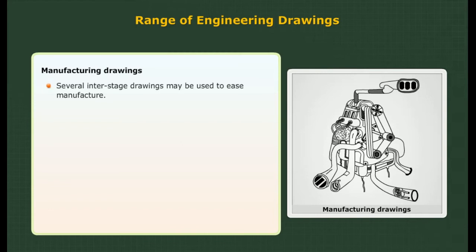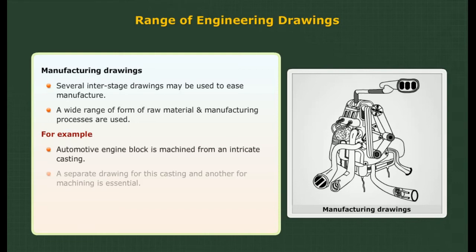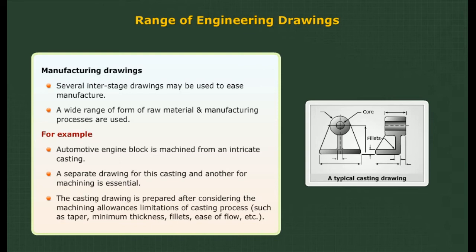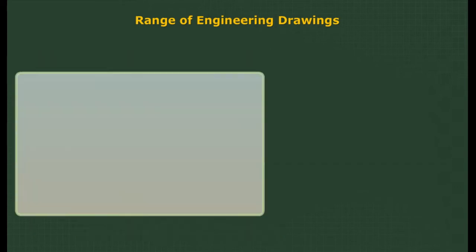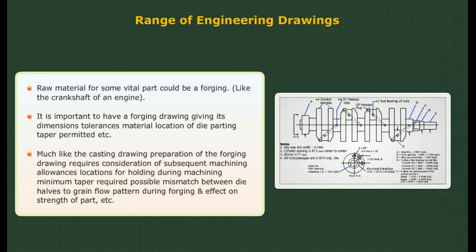Manufacturing drawings: several inter-stage drawings may be used to ease manufacture. A wide range of raw materials and manufacturing processes are used. For example, an automotive engine block is machined from an intricate casting; a separate drawing for this casting and another for machining is essential. The casting drawing is prepared after considering machining allowances and limitations of the casting process such as taper, minimum thickness, fillets, and ease of flow. Raw material for some vital parts could be forging; it is important to have a forging drawing giving dimensions, tolerances, material, location of die parting, taper permitted, grain flow pattern during forging, and the effect on strength of the part.